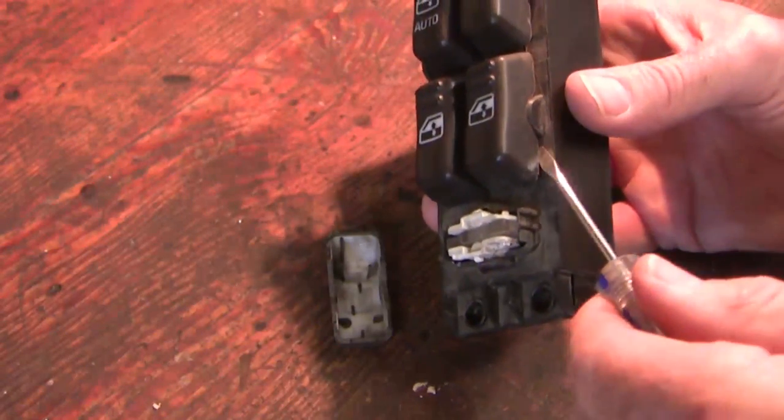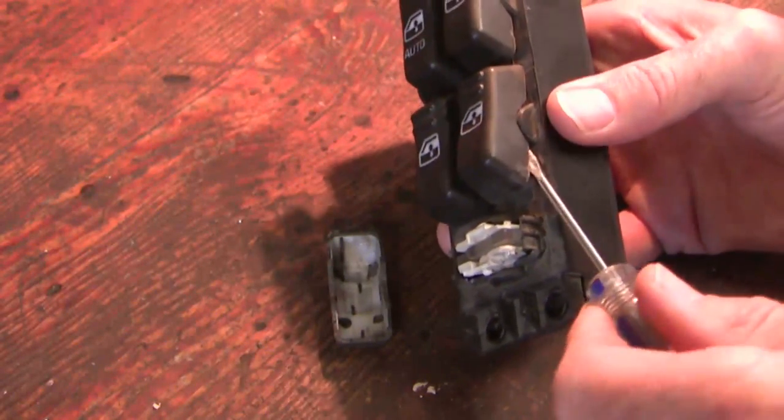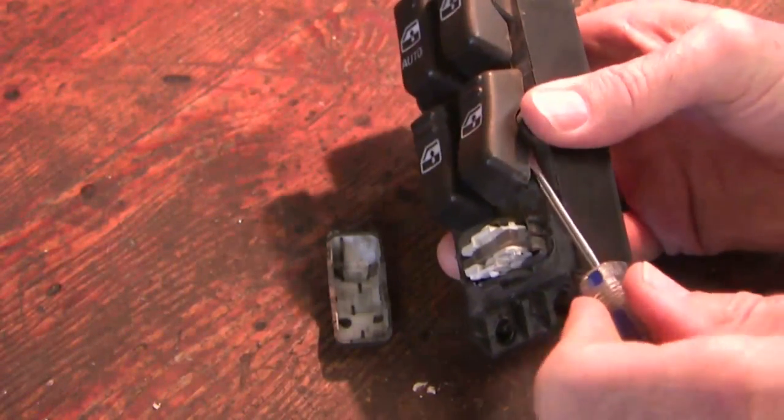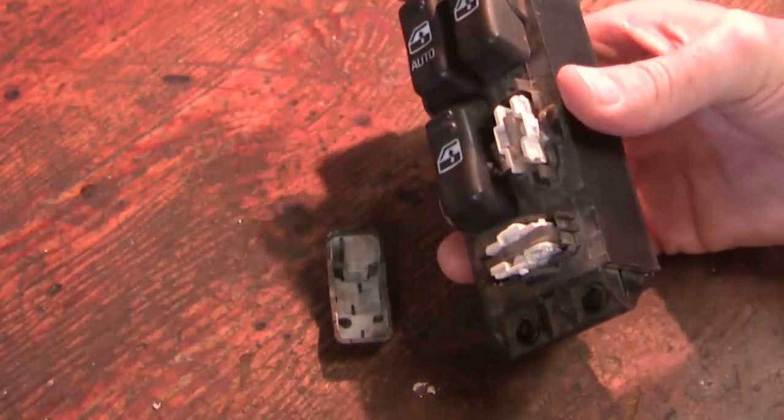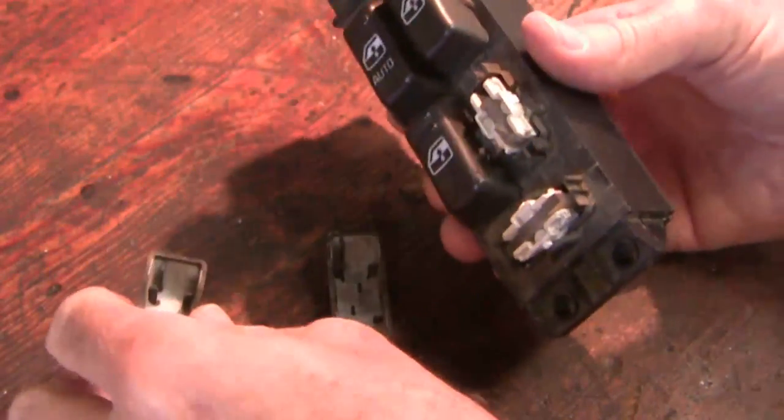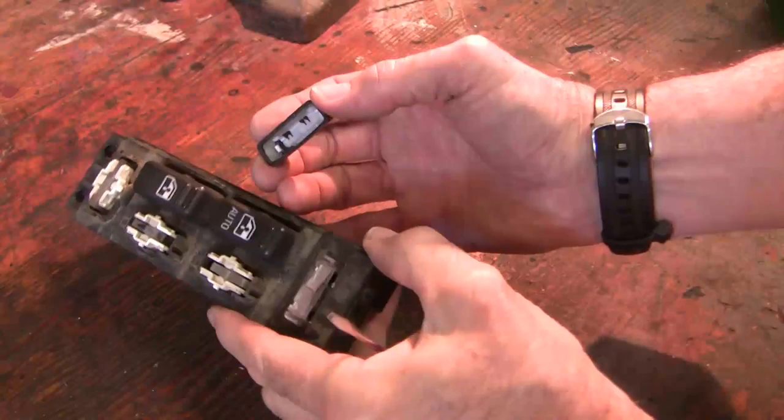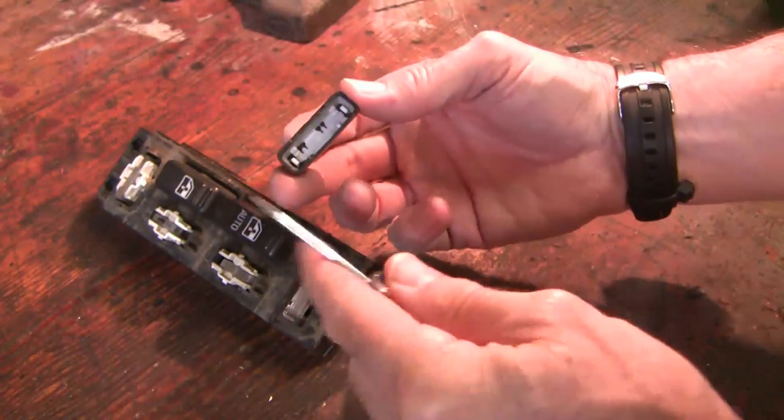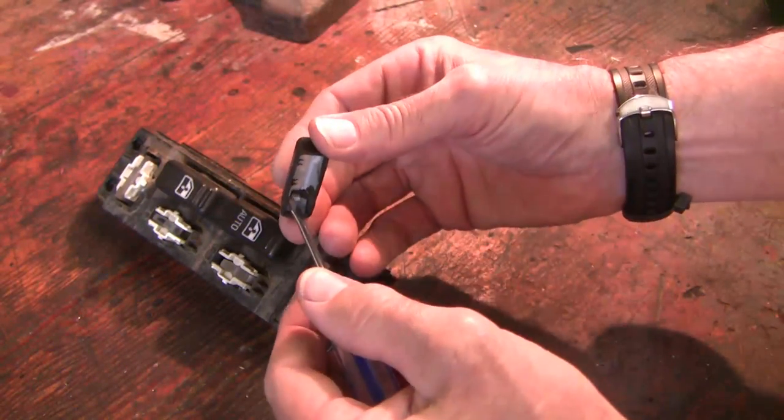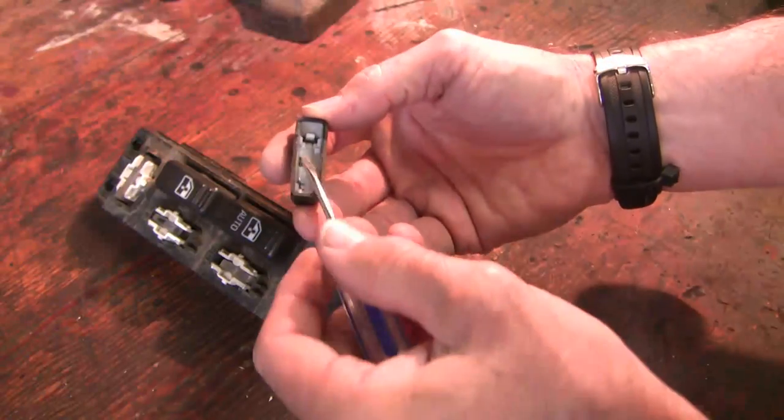We'll do it on this one. To get this apart, you need to take each of them off. Hopefully it doesn't go flying on you. All right, now this one here is a little different. The two hooks are on the outer edges. Here's one.